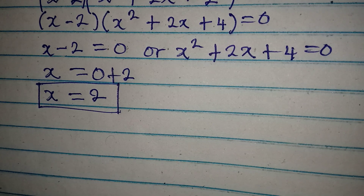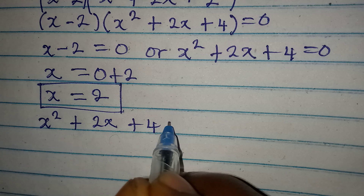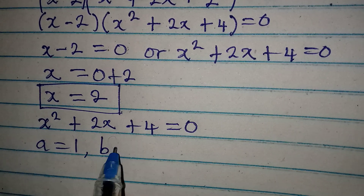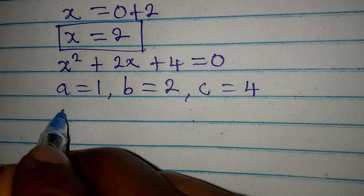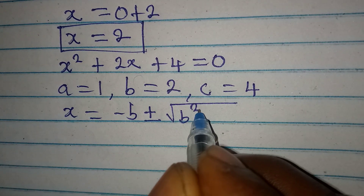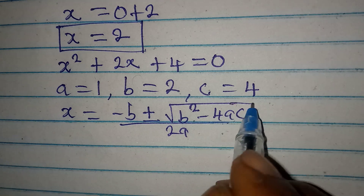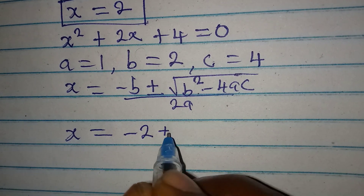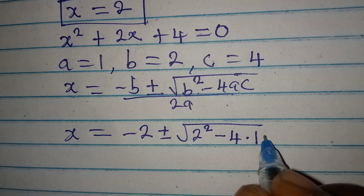From the quadratic equation x² plus 2x plus 4 equals 0 we are going to get two more values. Here a is 1 (coefficient of x²), b is 2 (coefficient of x), and c is 4 (the constant). The formula is x equals minus b plus or minus square root of b² minus 4ac, all over 2a.